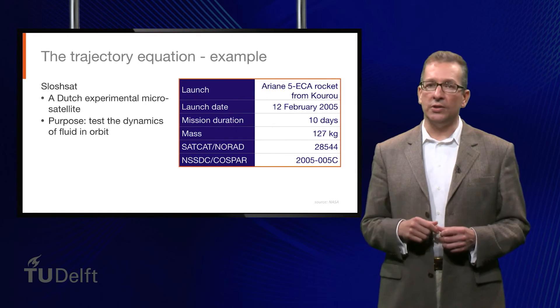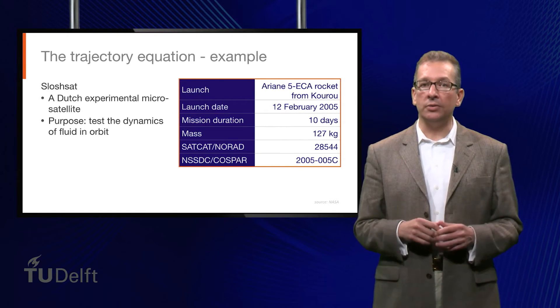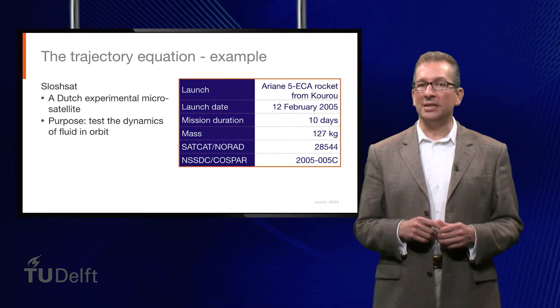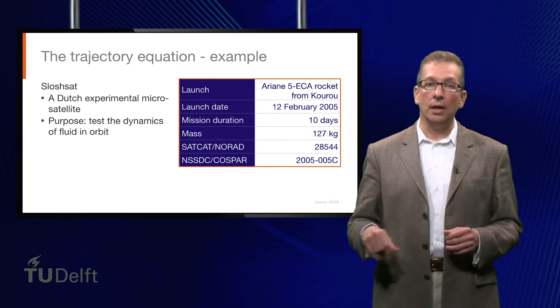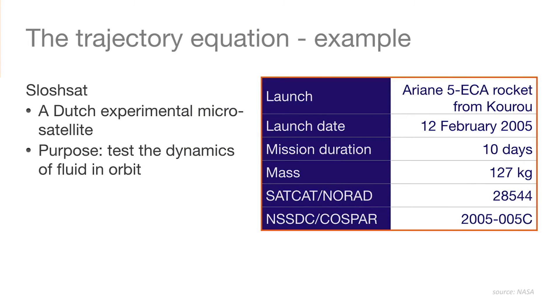Let's consider SLOSHSAT, a Dutch experimental satellite whose purpose was to test the dynamics of fluid in orbit. Designed for a 10-day mission, it was launched in 2005 on an Ariane 5 rocket from Kourou in French Guiana, where the primary launch site of ESA is located, that's the European Space Agency. Its mass was 127 kilograms.